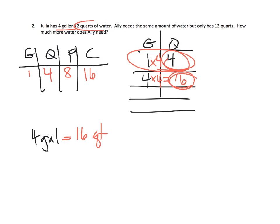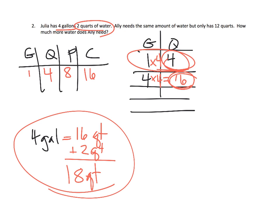And then Julia has two additional quarts plus two more quarts. So Julia has 18 quarts. So that is Julia right there. Now, the question is, Allie needs the same amount of water. Now, she only has 12 quarts. Well, that means Allie needs six more quarts because 12 plus what gives us 18? And of course, the answer is six. So Allie needs six more quarts.